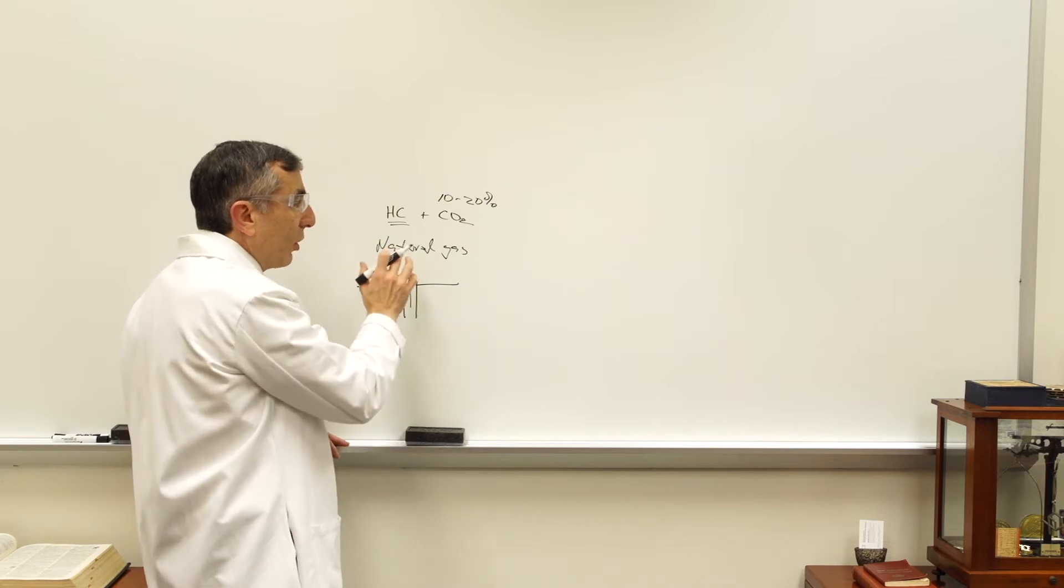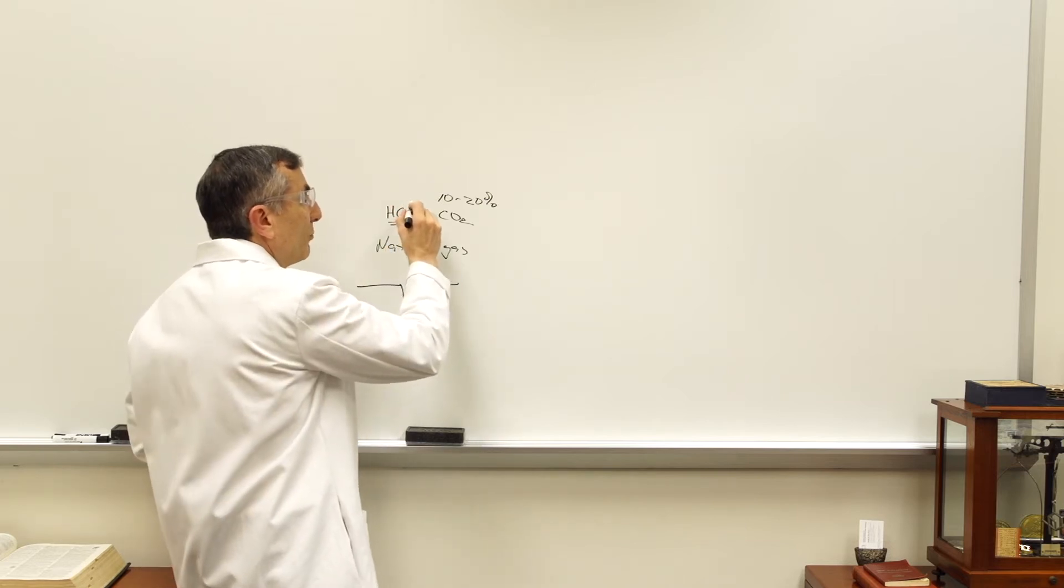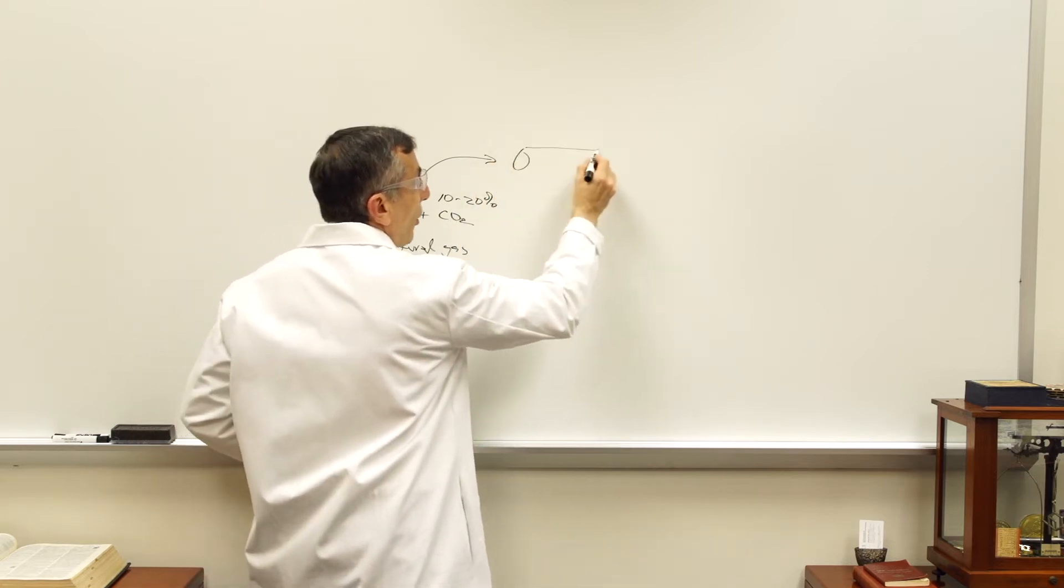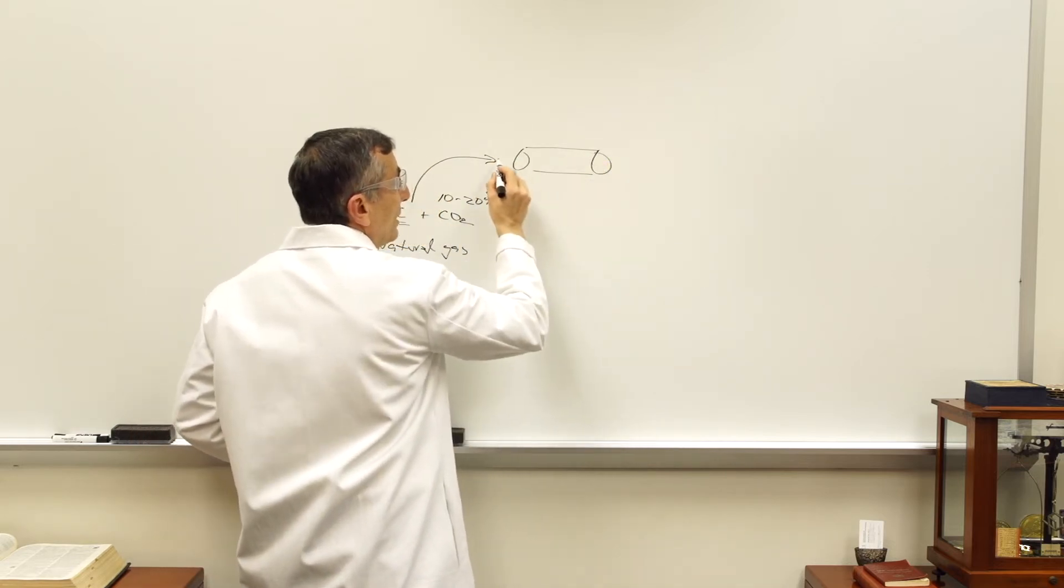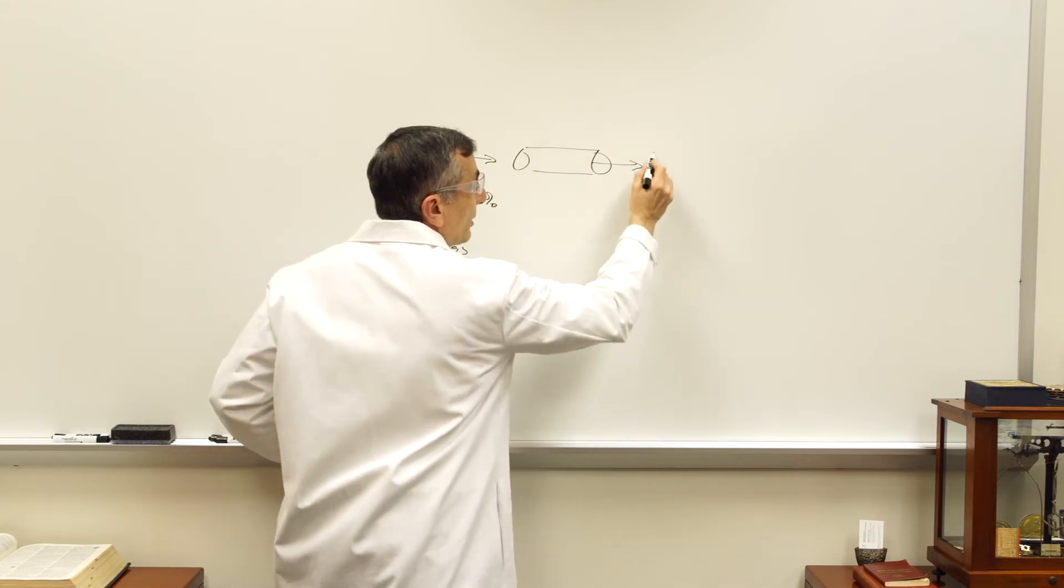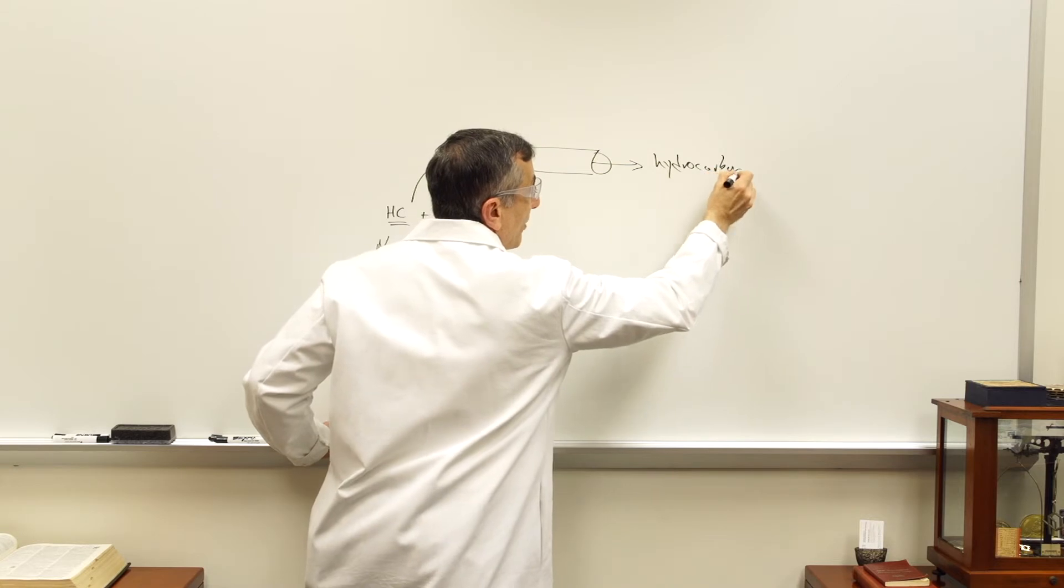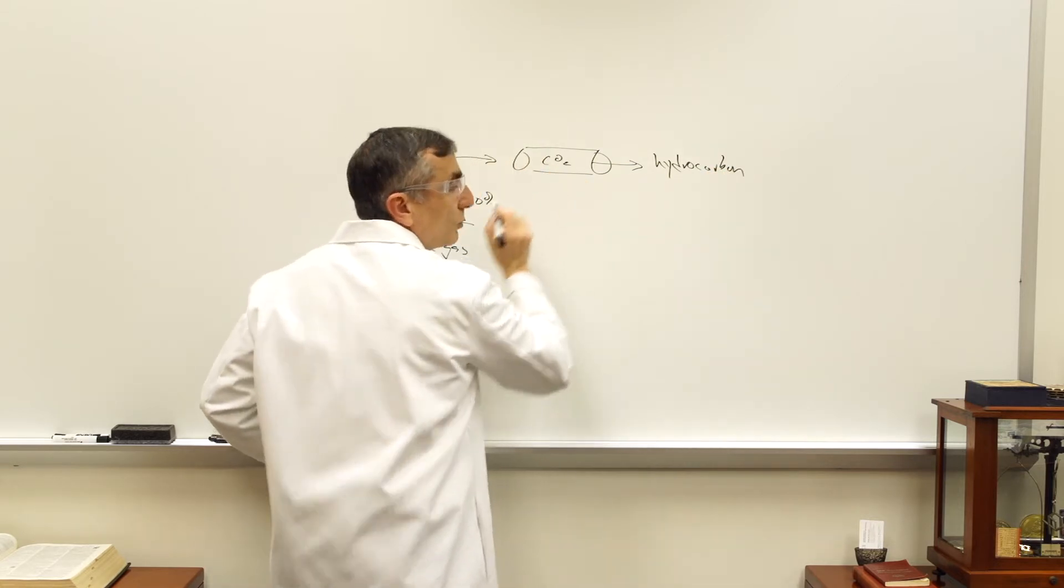And so what we found is this carbon material. If we flow this into a tube that has this carbon material in it, we can flow in this mixture and out only comes the hydrocarbon, and the CO2 stays within the tube.